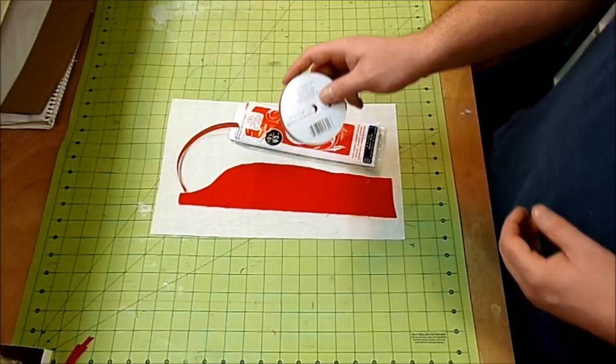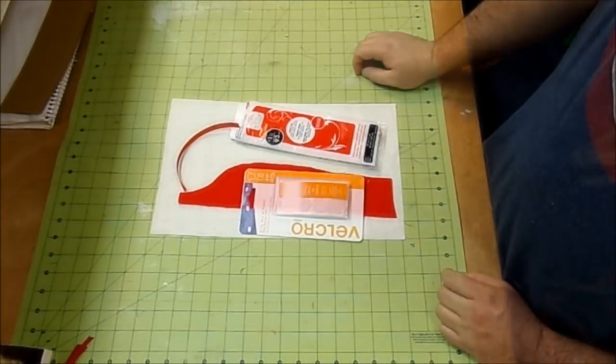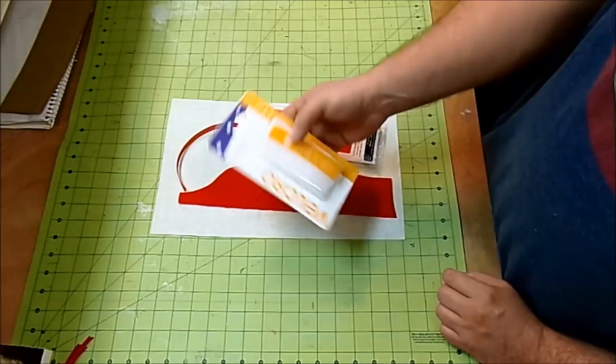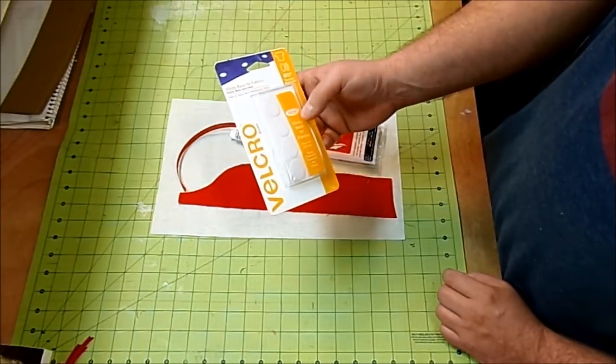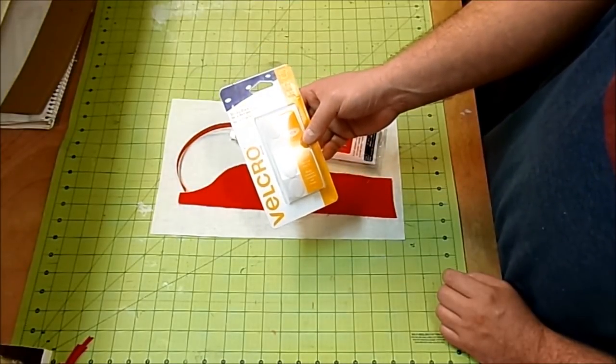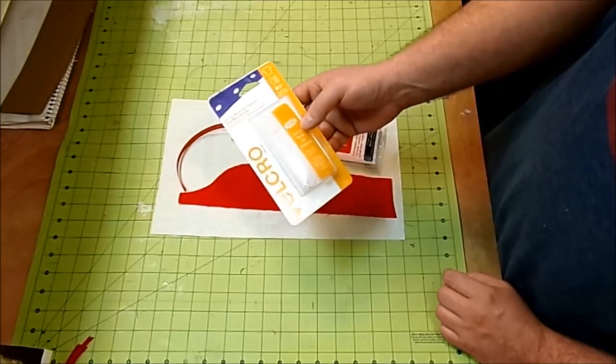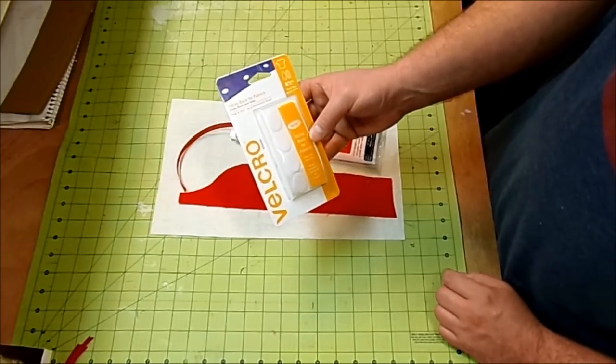Now for the closure for our envelope, I'm just gonna use these velcro dots here. I got these at Walmart and they're specifically for fabric. It comes in a pack of eight and it's supposed to be peel and stick for a permanent bond. We'll see how well these work.